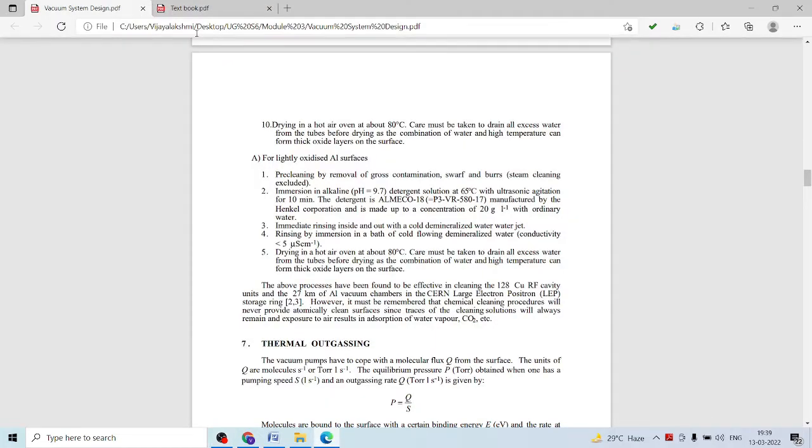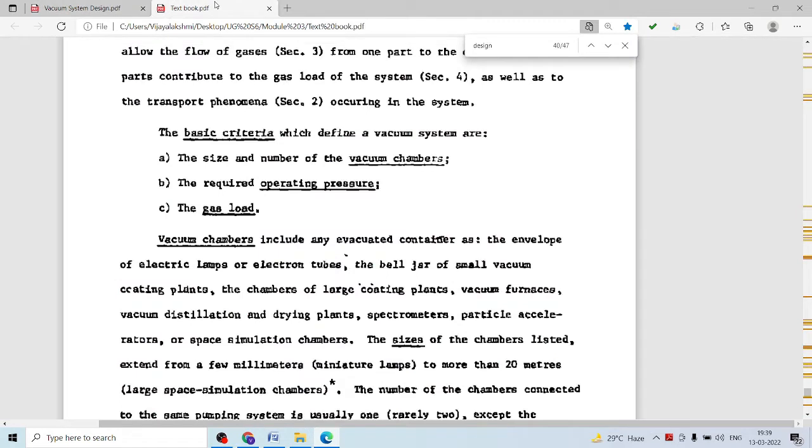A vacuum system is an assembly of components used to produce, measure, and maintain vacuum in a vacuum chamber.